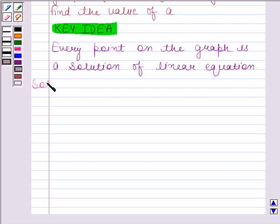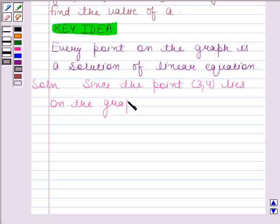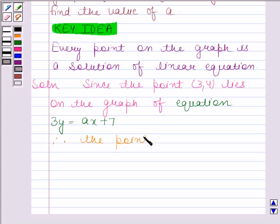Start the solution. Since the point (3,4) lies on the graph of equation 3y = ax + 7, therefore this implies that the point (3,4) is a solution of the given equation.